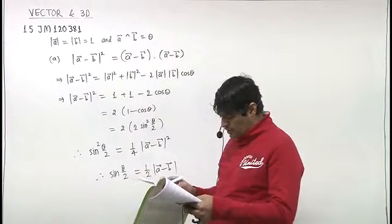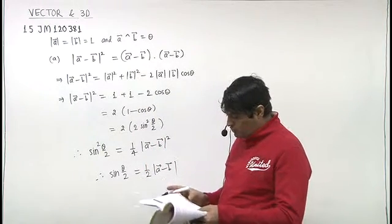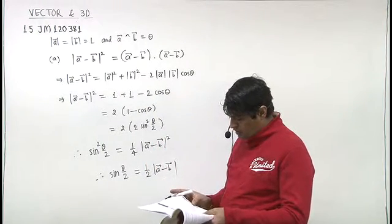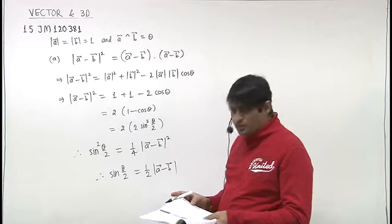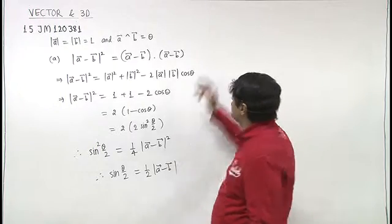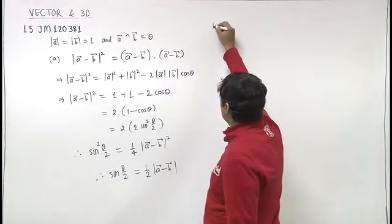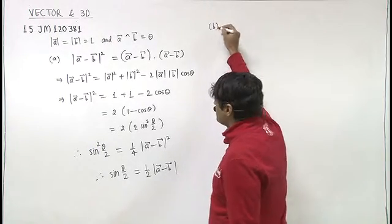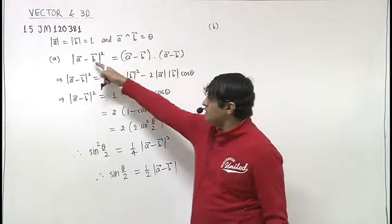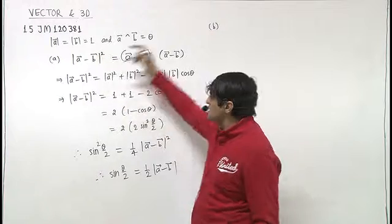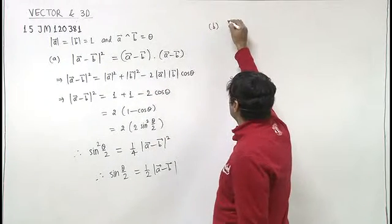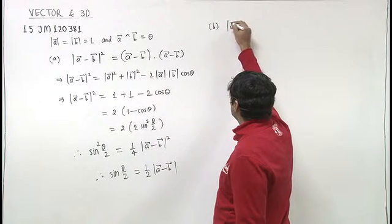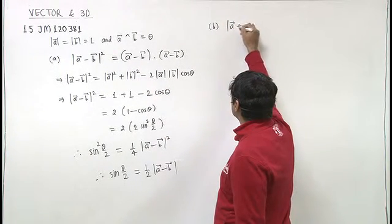So the first part is proved. For the second part, we have to prove that cos theta by 2 equals half mod of a plus b. Similar to the previous part, we will now consider mod of a plus b whole square.